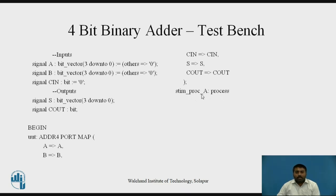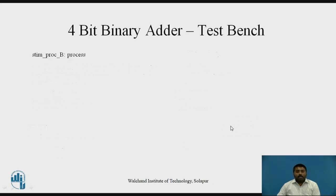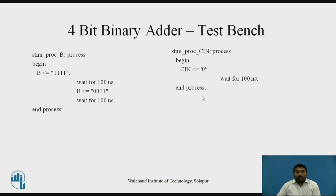This process is written for signal A, so it is named stimulus process A. In that process, value assigned to A is 0 1 0 0, then we wait for 100 nanoseconds, then A is updated with another value, and we wait for 100 nanoseconds again. Here the stimulus process A ends. The same process is written for signal B: B is updated with the value 1 1 1 1 — a 4-bit signal — then we wait for 100 nanoseconds, then B is updated with value 0 0 1 1, wait again for 100 nanoseconds, and the process for B ends. Similarly, we did the same for C in — carry in — applying a single bit signal with value 0, waiting for 100 nanoseconds, then ending the process.